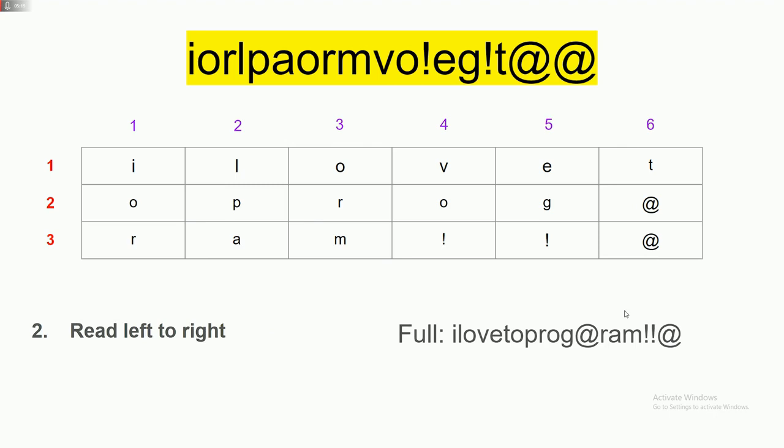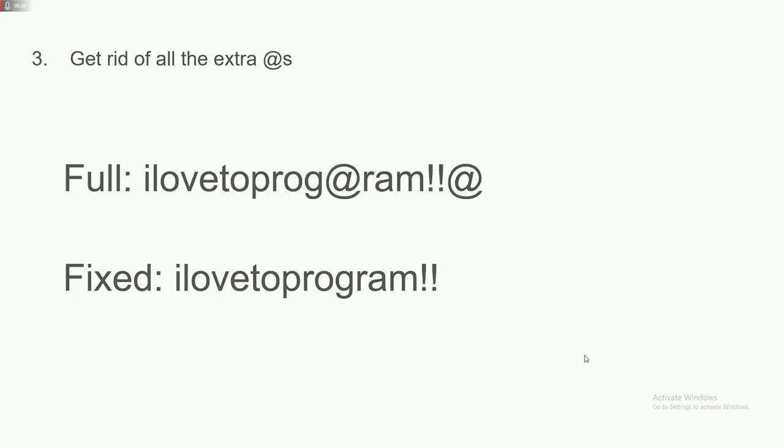Then from there, now we just read it left to right. Say, I love to program, but there's some problems. There's some at signs here. So what do we do about them? We just get rid of all of them. We get rid of all these extra at signs, and then once it's done, it'll just read, I love to program. No at signs. Great.